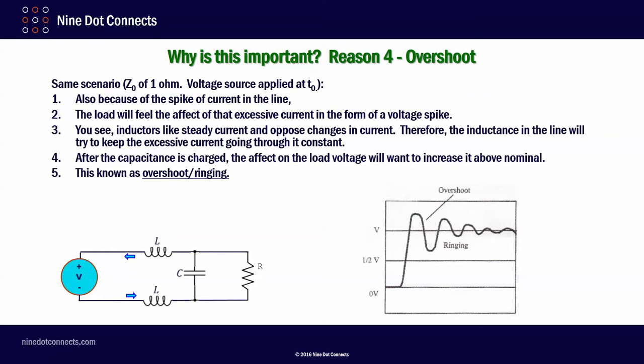Reason number four, overshoot. Again, because of the spike of current in the line, the load will feel the effect of that excessive current in the form of a voltage spike. You see inductors like steady current and oppose changes in current. Therefore, the inductance in the line will try to keep the excessive current going through it constant. After the capacitance is charged, the effect of the load voltage will want to increase it above nominal. This is known as overshoot and has ringing. You can see that over here, that as the line charges, and then when it finally gets charged and the resistor takes over, the inductors will cause this overshoot. And then them with the capacitors will cause this ringing.